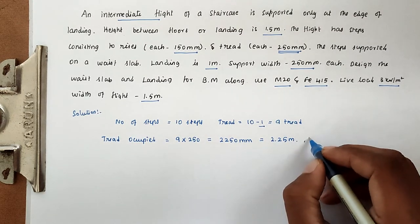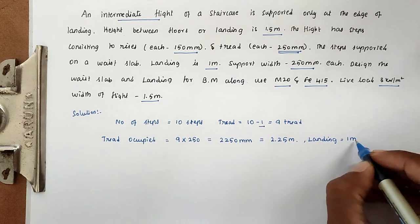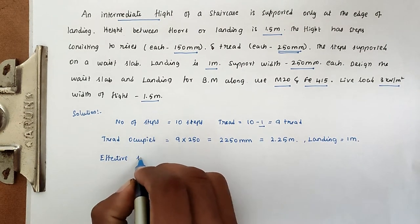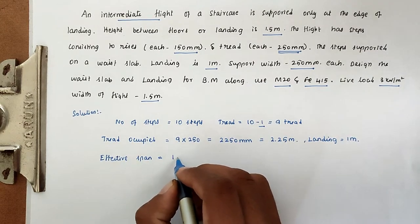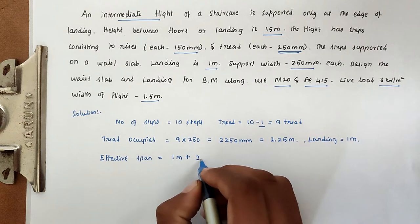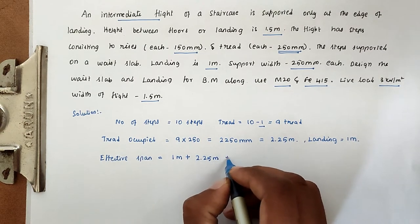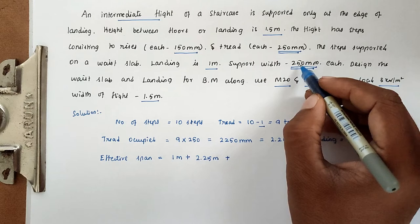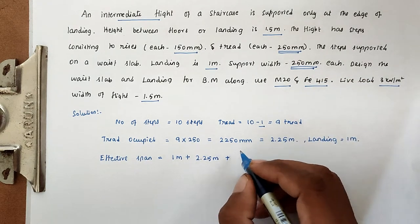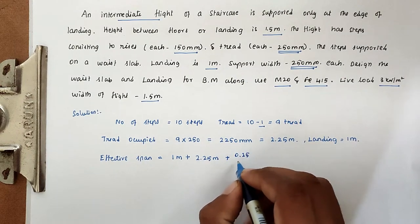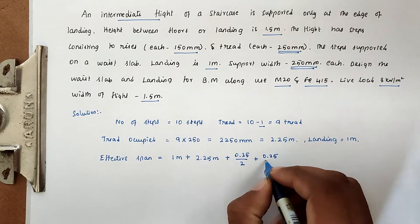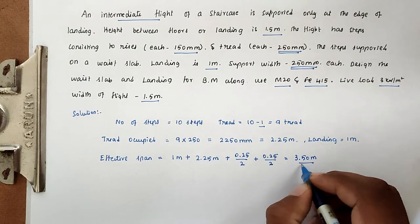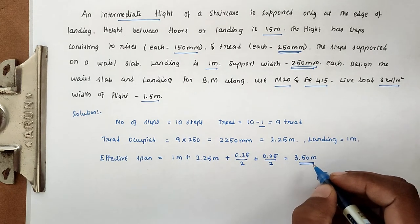The landing is given as 1 meter. Now we calculate the total effective span. Effective span equals 1 meter (landing) plus 2.25 meter (tread distance), plus both supports of 250mm divided by 2 on each side, giving a total effective span of 3.50 meters.